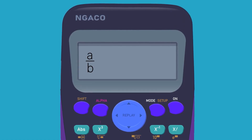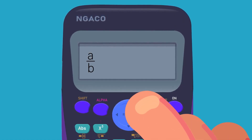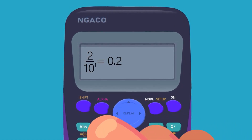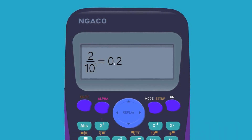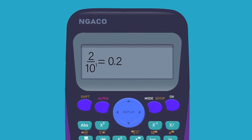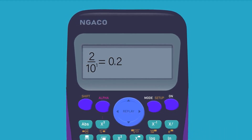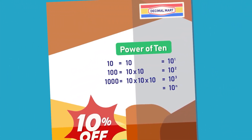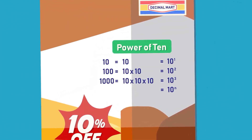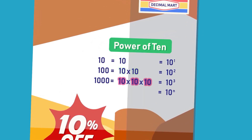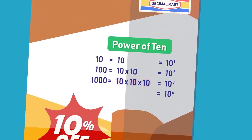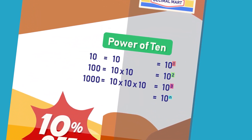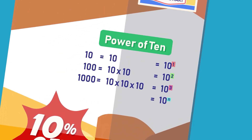Decimals are defined as fractions which have denominators with powers of 10. In a decimal form, there will be a decimal point indicating the place value of the numeral in a whole number. Remember that power of 10 is the multiplication of 10 by itself, such as 10, 100, or 1000, and can be represented as 10 to the power n, where n is a factor of multiplication.